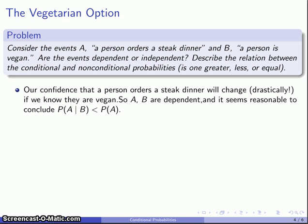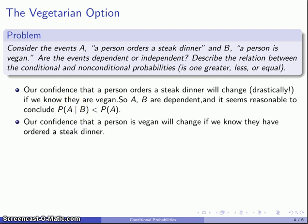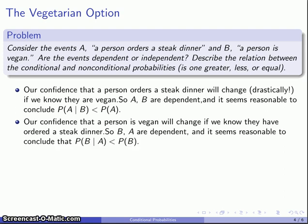It seems that the probability they order a steak dinner, given that we know they're vegan, should be less than the probability that they order a steak dinner — we should be less confident. Likewise, considering events in the other direction: we have some sense of the probability a person is vegan. If we then see them ordering a steak dinner, our confidence that they're vegan changes considerably. Again, the events B and A are dependent, and the probability that the person is vegan, given that we know they've ordered a steak dinner, is less than our original assessment.